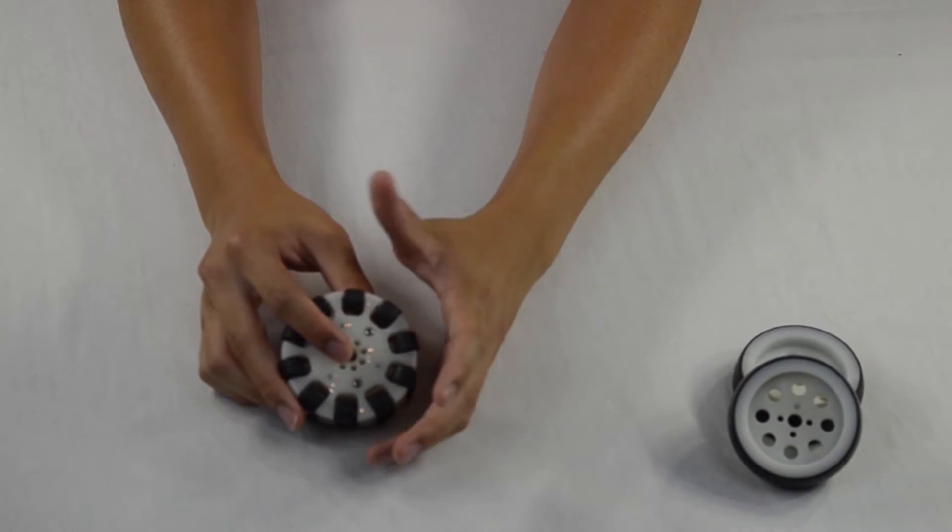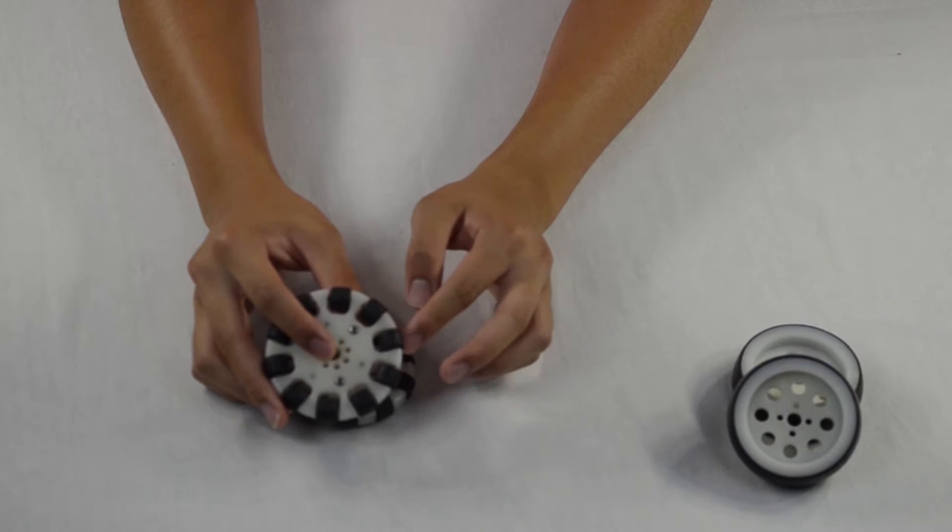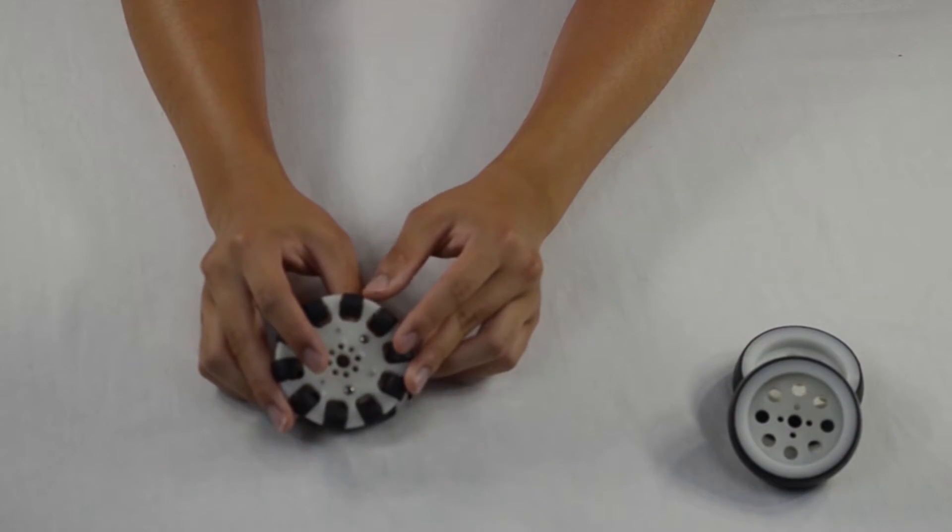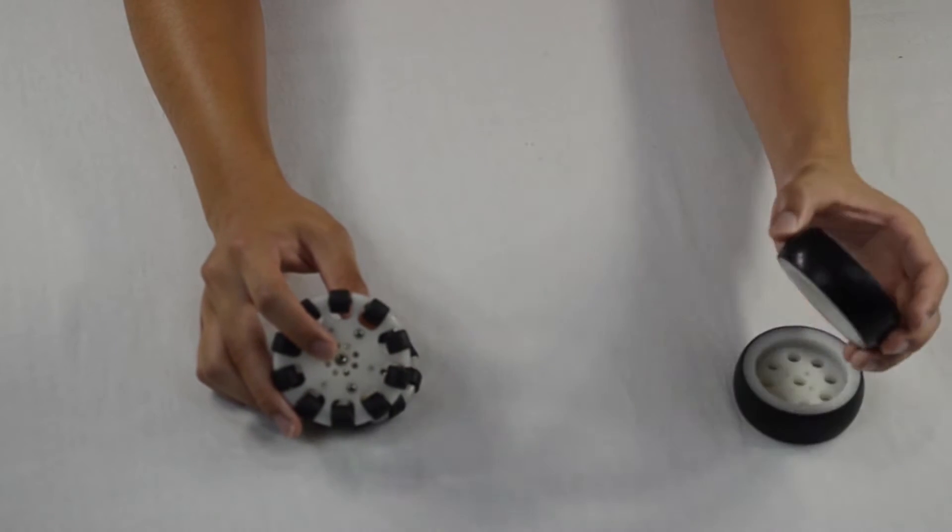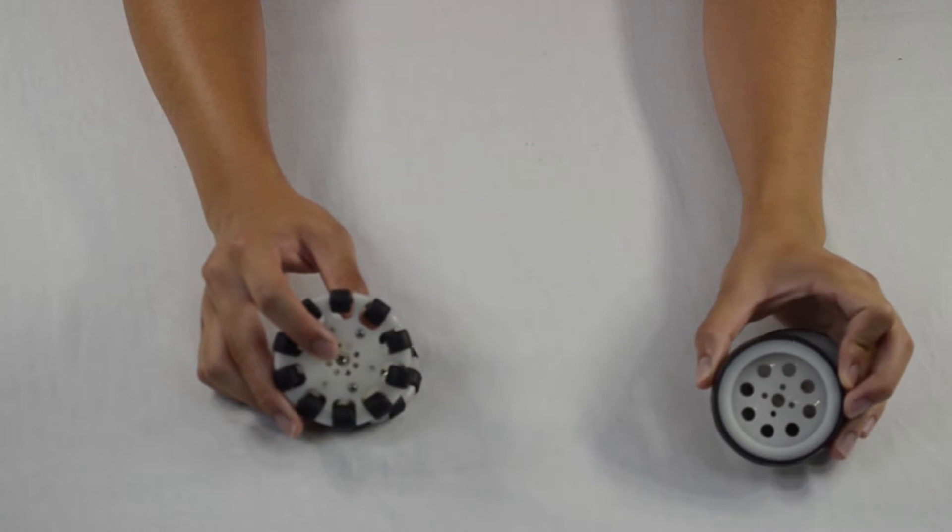But instead of the rubber coating, you actually have rubber wheels that go in different directions. This is great for building an omnidirectional robot which can actually move in multiple directions, while this one actually has to turn to get to a new position.